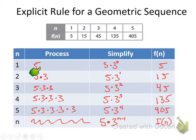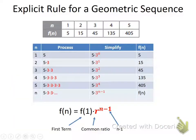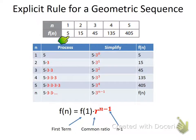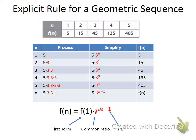Let's generalize. The rule is: f(n) equals the first term in the sequence times the common ratio to the n minus one power. The first term in our sequence was 5, so our function starts with 5. The common ratio is the number you multiply by every time, and the exponent is always n minus one for geometric sequences.